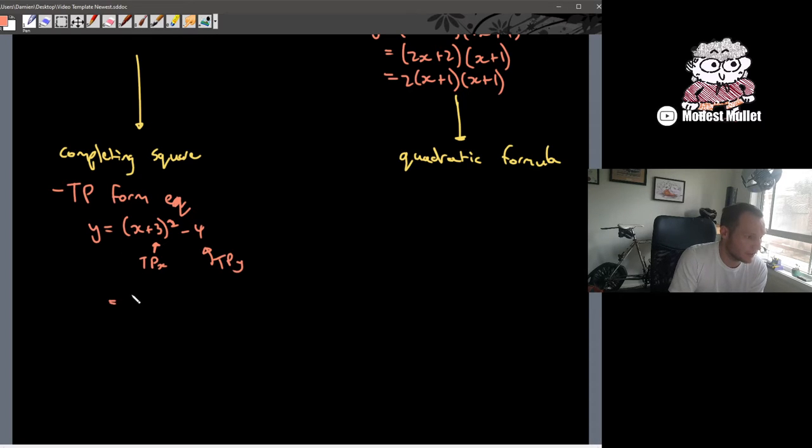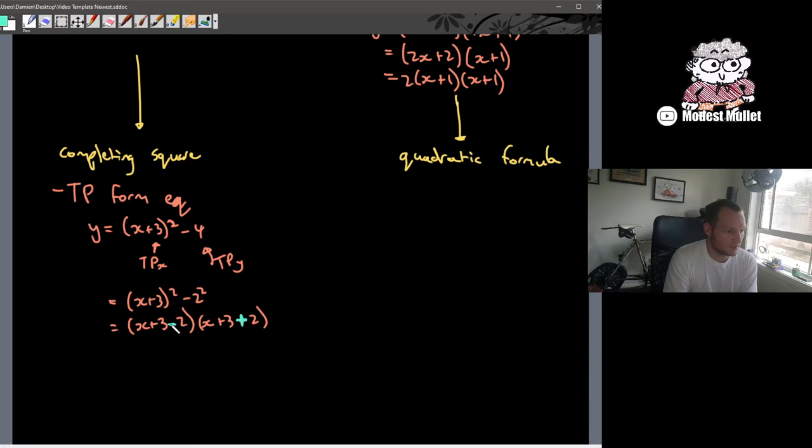And then if we factorise that one further, we get x plus 3 all squared minus 2 squared. We now have difference of perfect squares. So we get x plus 3 minus 2, x plus 3 plus 2. Remembering here that these signs, we make them different. Whatever the second bit is, we put them behind different signs. And in this case, we could have simplified this further. We get x plus 1, x plus 5. So having shown how to get to this step, you'll have to go back and check the notes, what we've done on the completing the square method up to that point.